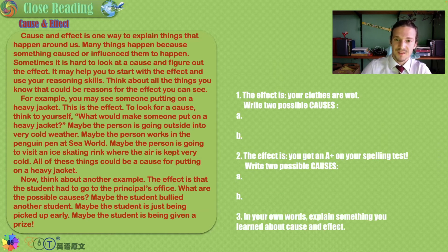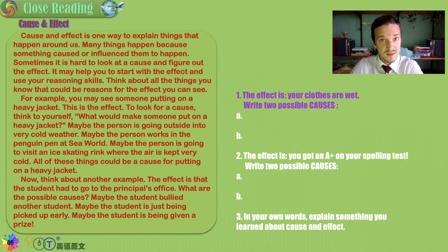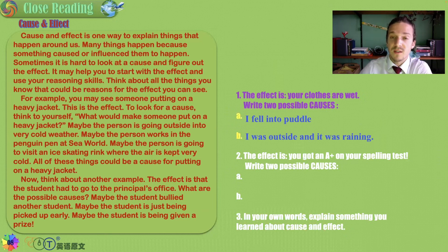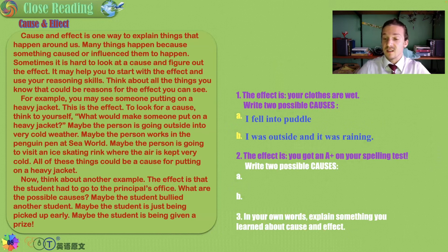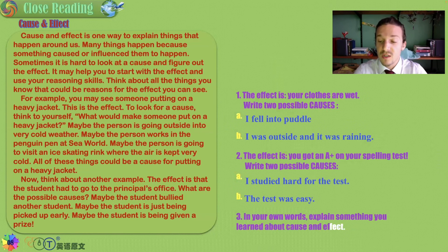The effect is that your clothes are wet — give two possible causes. How about: I fell into a puddle, therefore my clothes are wet. Or: I was outside and it was raining. The effect is you got an A-plus on your spelling test — what are some causes? I studied hard. The test was easy. In your own words, explain something you learned about cause and effect.